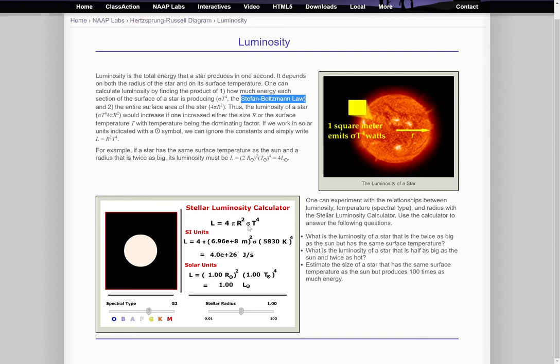This sigma right here is a constant that basically says we can work in SI units. So the luminosity for a star can be calculated in joules per second, and we can put the radius of the star in meters, and the surface temperature in kelvins, and we can calculate what the output, the watts, or the joules per second would be for that star.